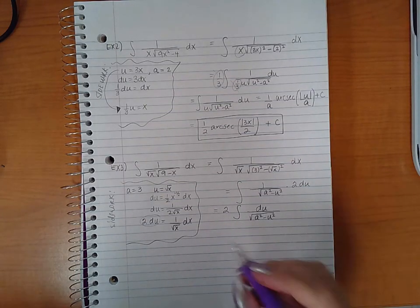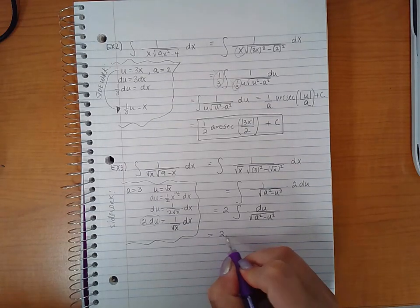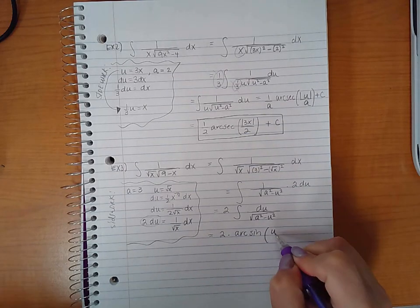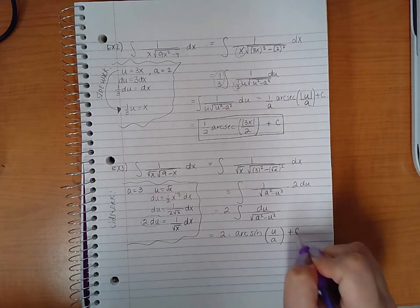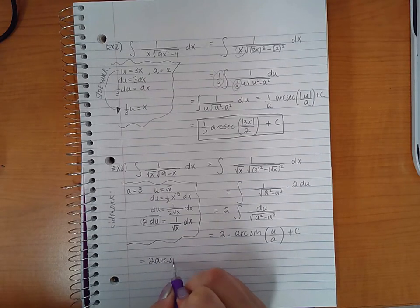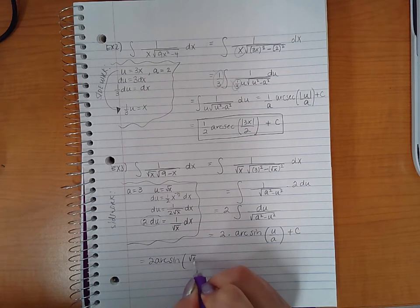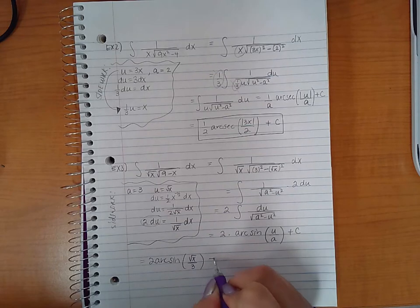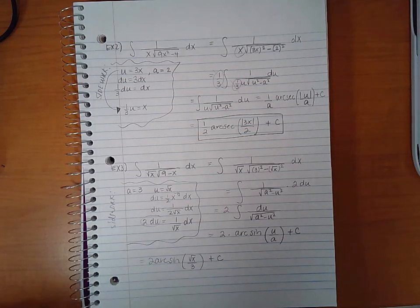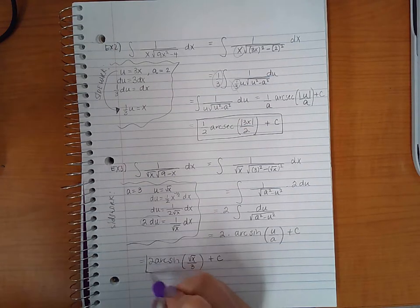So this will end up becoming 2 times arc sine of u over a plus c. And if I back sub, I get 2 arc sine of square root of x over 3 plus c. And that is actually simplified to its lowest terms. So I don't have anything else to do here. This is going to be my final answer.